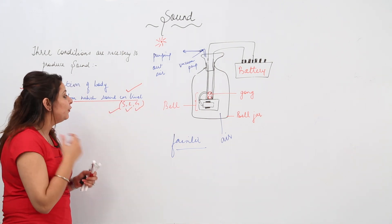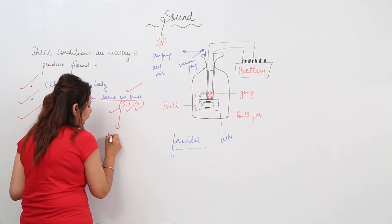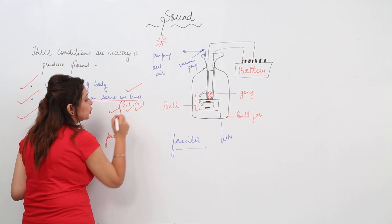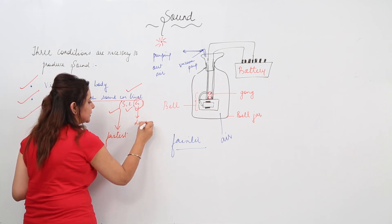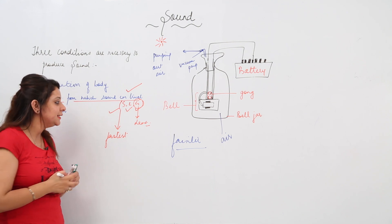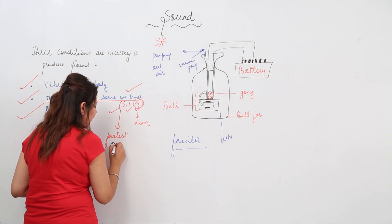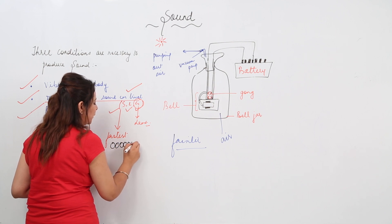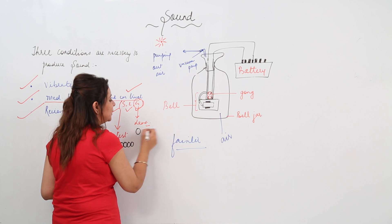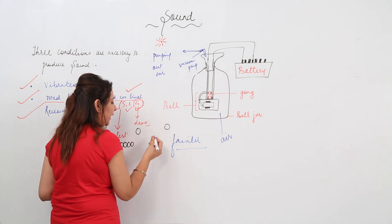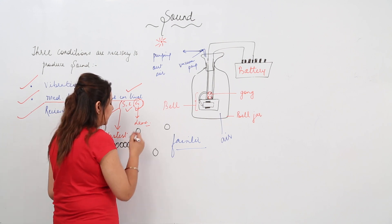Sound can travel through solid, liquid, and gas. Out of these three, it travels fastest through solid and its speed is least in gases. The reason is that in solids, particles are closely packed, so they can transfer their vibrations very fast. But in gases, particles are far apart.